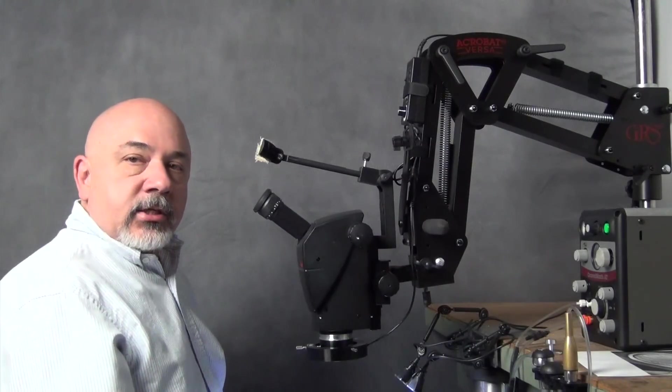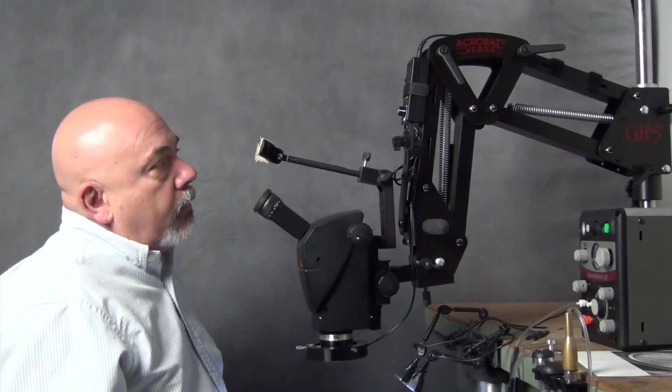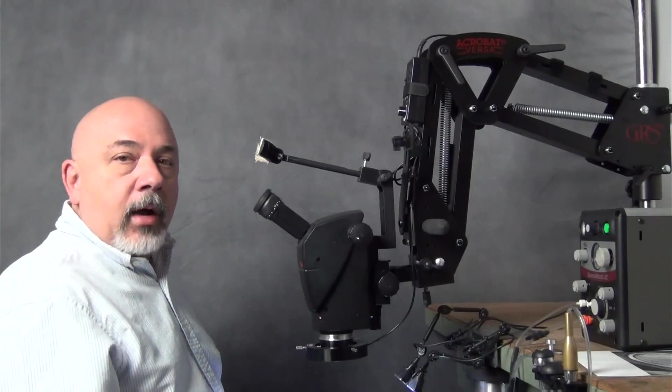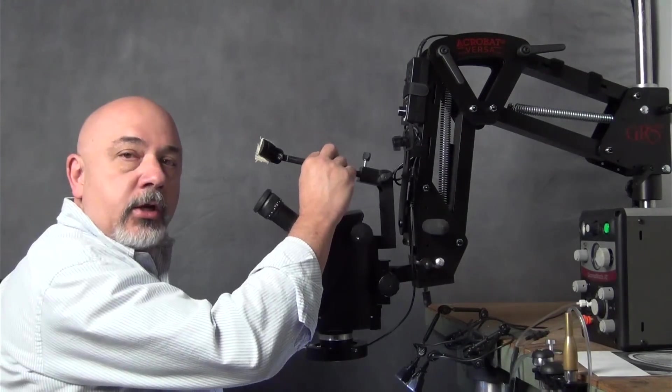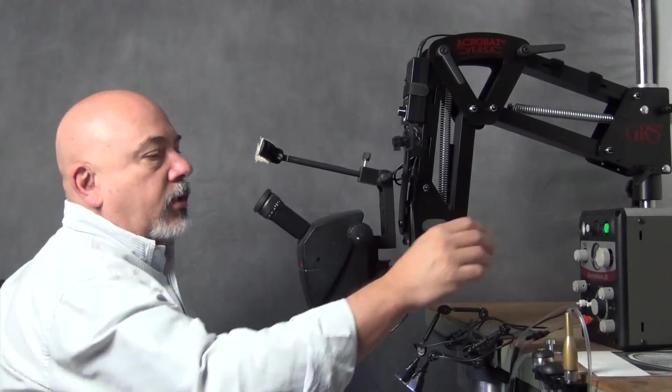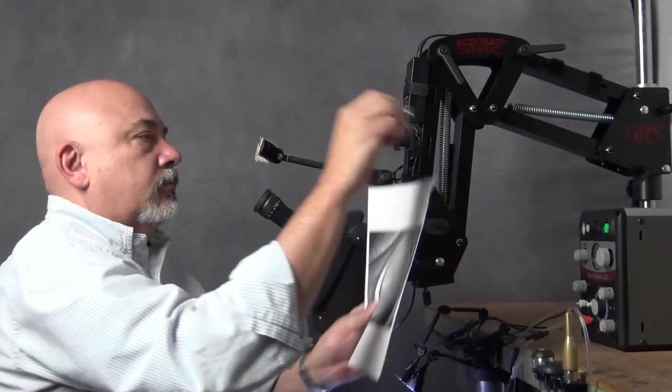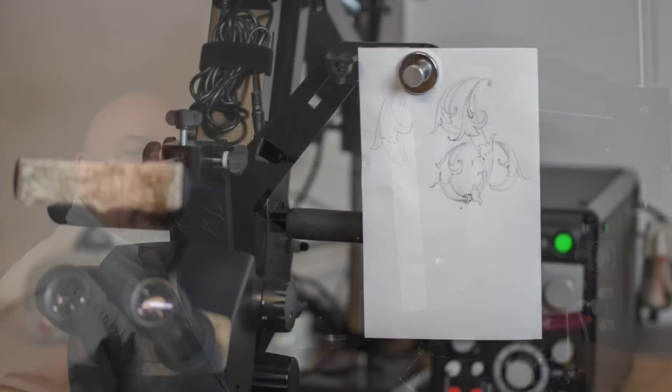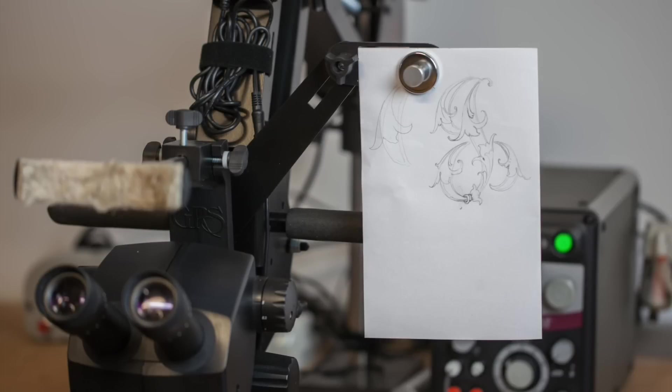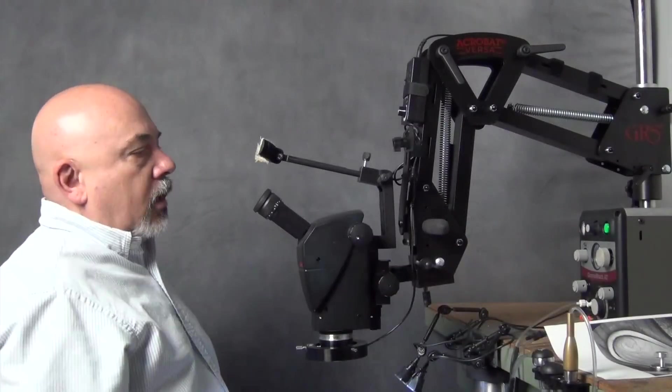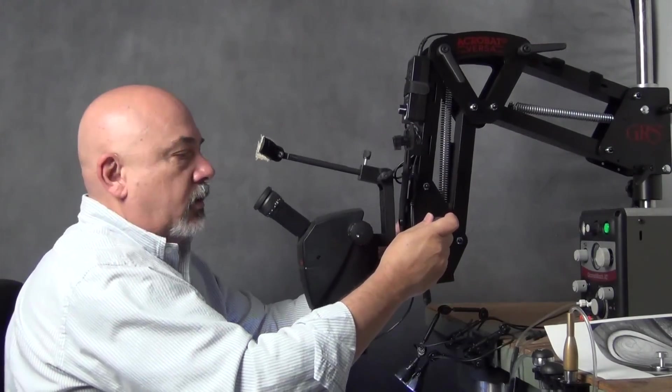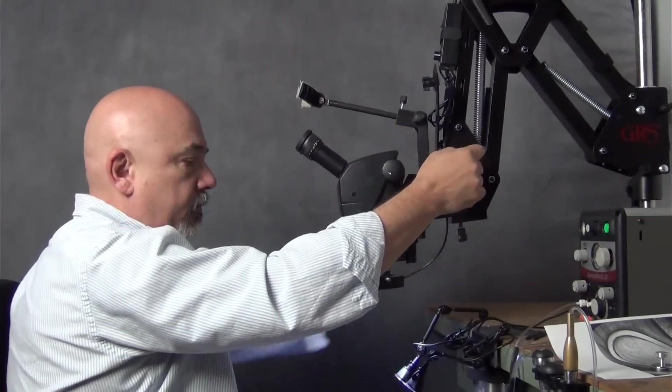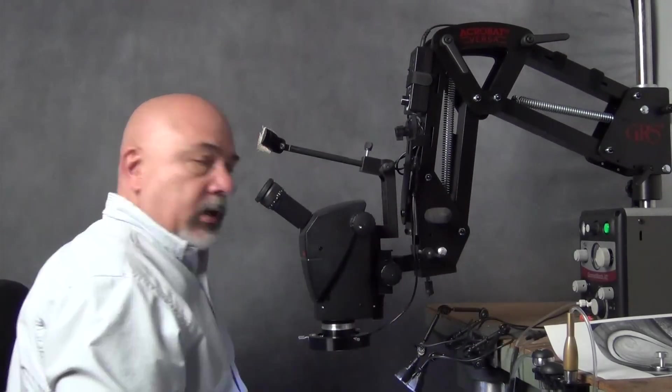When you purchase the Leica A60 system from GRS, it'll come with the Acrobat Versa microscope stand, as well as quite a few other bells and whistles, including an adjustable headrest, a document holder where you can clamp your work there to refer to it while you're engraving. It also has two handles on the side, which makes repositioning the microscope effortless. You can slide it out of the way and reposition it with very little trouble.